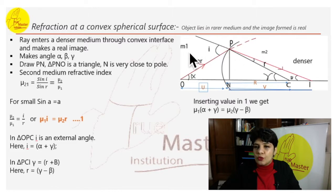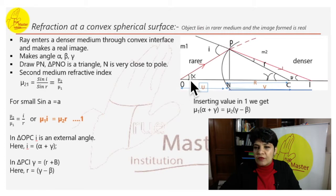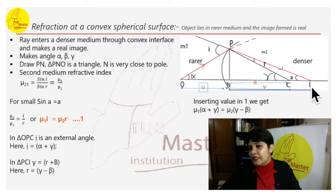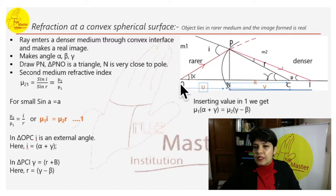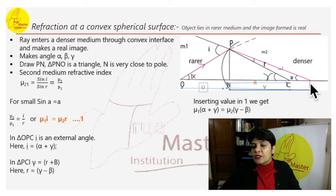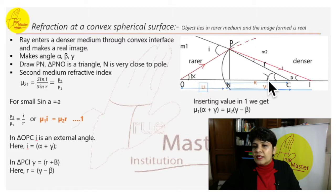The angles formed are alpha, beta, and gamma. A ray passing from the object strikes the convex spherical surface, bends down, and the image is formed where the two rays meet. The second ray travels along the axis from O all the way to I. Alpha is the angle here, this is gamma, and this is beta.